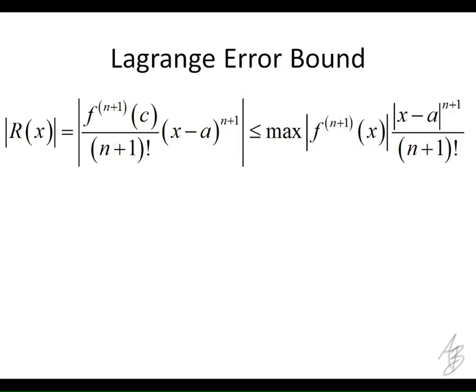So the Lagrange error bound is given by this. This right here is the remainder term. And so the remainder is going to be less than or equal to the maximum value of that derivative evaluated at x on the interval. So this essentially is the same thing, but we're finding the maximum value of the derivative on the interval. So I should say here that this x is on the interval from x to a.